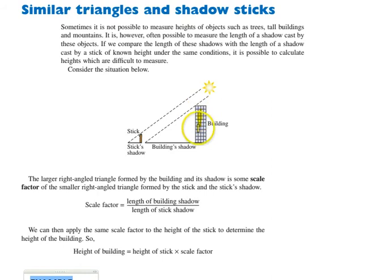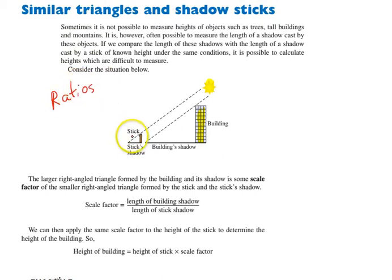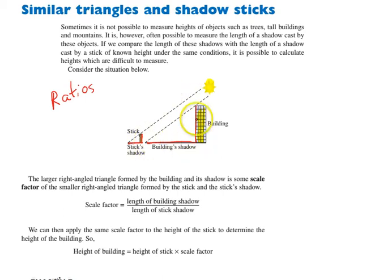Let's say you had a building — here's our building here — and the sun's way out over here somewhere. The shadow that the building casts can tell us something about the height of the building. We can do that by looking at a smaller object, like a stick, and the shadow that the stick casts. Because of ratios, the ratio of the stick's height to the stick's shadow is going to be equal to the ratio of the building to the building's shadow. If you figure out this ratio, you'll be able to figure out this ratio. That's the basis behind it.